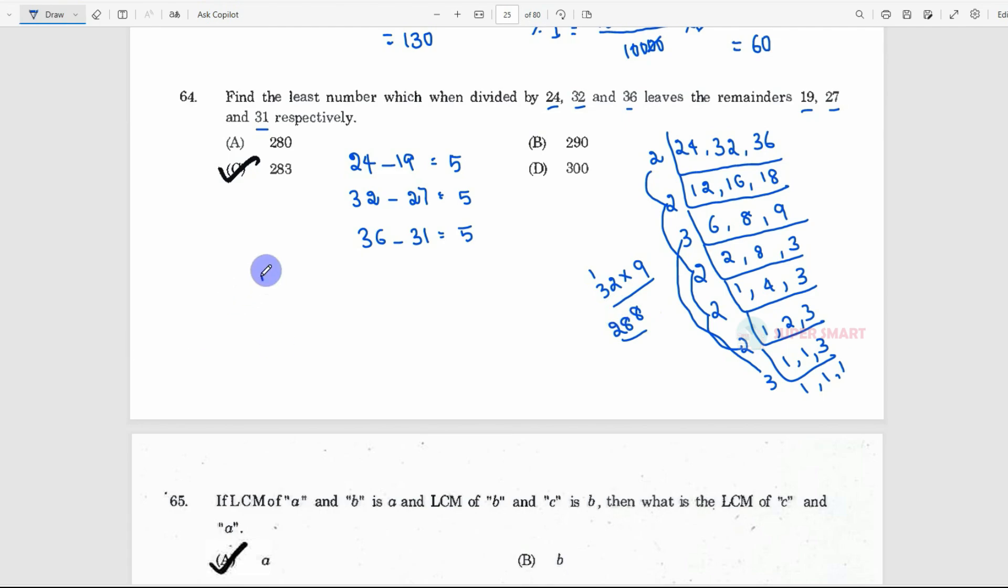LCM of this 3 numbers, 24, 32, 36, the answer is 288. We start with 288. What do we do here? We use this difference value. Minus 5. In 288 minus 5 is 283. The answer is option C.